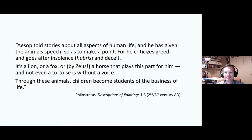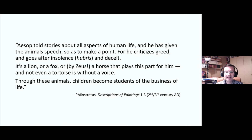Philostratus continues: Aesop criticises greed and he goes after insolence and deceit. Insolence there is hubris — that ancient Greek idea of getting too arrogant, doing violence to other people as a result. It's a lion, or a fox, or by Zeus a horse that plays this part for Aesop, and not even a tortoise is without a voice. Through these animals, children become students of the business of life. So what we see here is the idea that fables are particularly used in the education of children, and Philostratus talks about them being students of the business of life, reflecting the way that many of these fables carry a message that basically says this is how the world is — people just are greedy and insolent — and we have to find ways of dealing with that reality.